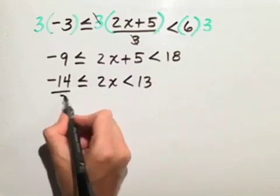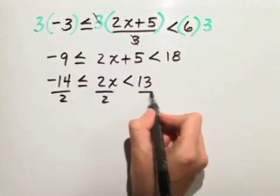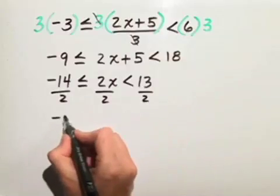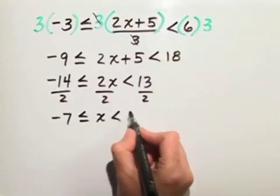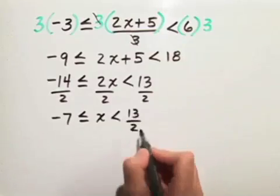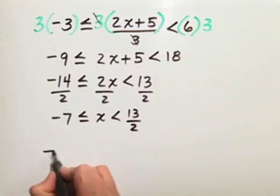We divide all 3 parts by 2, and our solution is negative 7 is less than or equal to x, which is less than 13 halves. Let's graph this solution.